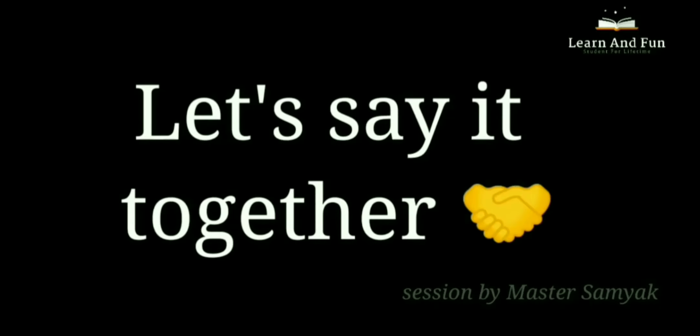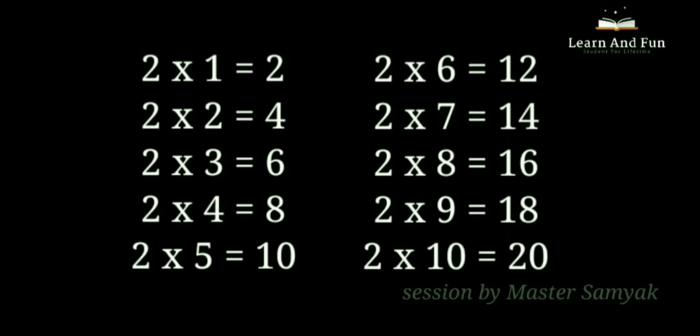Let's say it together. 2 ones are 2. 2 twos are 4. 2 threes are 6. 2 fours are 8. 2 fives are 10. 2 sixes are 12. 2 sevens are 14. 2 eights are 16. 2 nines are 18. 2 tens are 20.